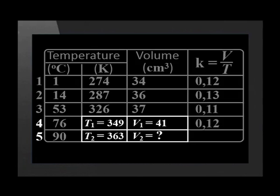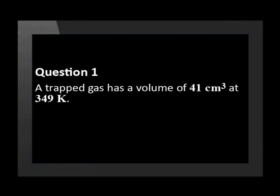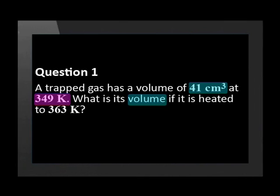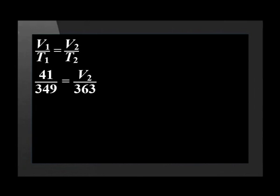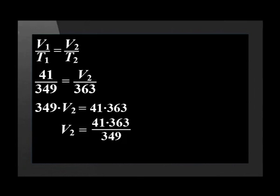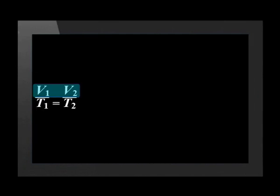What would the learners have measured the volume to be if they had raised the temperature to 90 degrees Celsius? We first convert the temperature to Kelvin by adding 273, giving us 363 Kelvin. We can solve for the unknown value with proportion or with an equation. Using line 4 as our comparison state: T1, V1, T2, and the unknown V2. Since this data has experimental error, you may get slightly different answers using other lines. The question in words: a trapped gas has a volume of 41 cm³ at 349 Kelvin — what is its volume if heated to 363 Kelvin? We substitute values into the equation, cross multiply, and solve for V2. V1 and V2 must have the same unit, and T1 and T2 must both be in Kelvin.